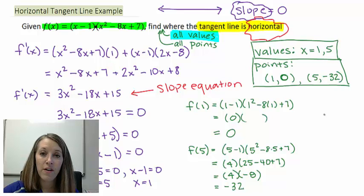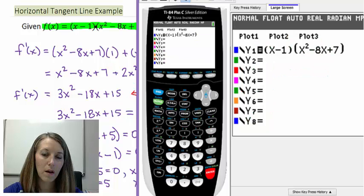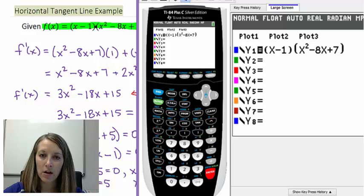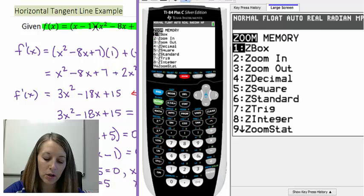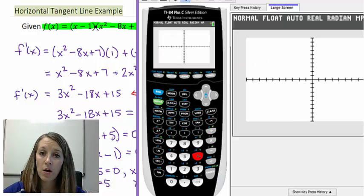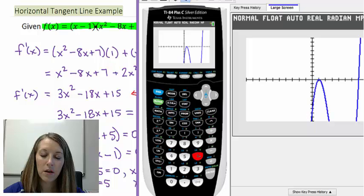Now that we've found that by hand, we can always double check it. So the way to double check this is to graph the original equation and see if that makes sense where our tangent line is horizontal. So I have my original equation substituted into my graphing calculator here. I'm going to go ahead and start out on the standard window, even though I know that this is not the best window to look at, and I'll explain why here in a second.